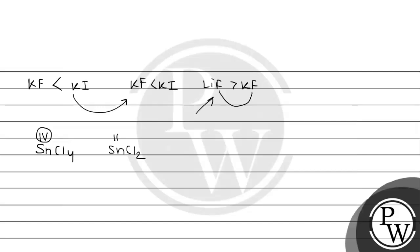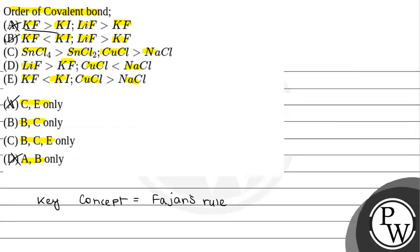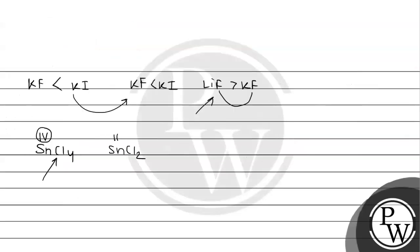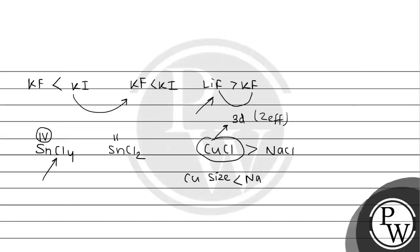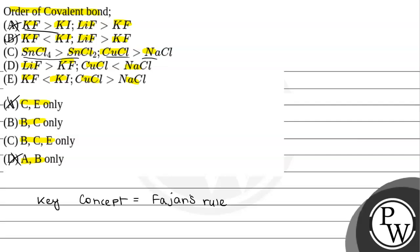For SnCl4 versus SnCl2: Sn in SnCl4 has a higher positive charge (+4) compared to SnCl2 (+2), so SnCl4 definitely has greater covalent nature. For CuCl versus NaCl: Copper is a transition metal, so due to effective nuclear charge, its size is smaller compared to sodium, a main group element in the same period. Therefore, CuCl has greater covalent character than NaCl.